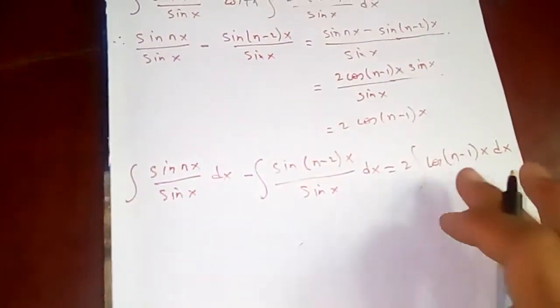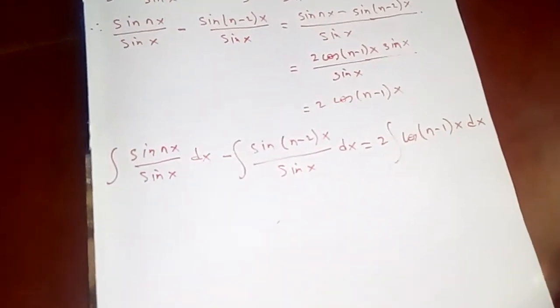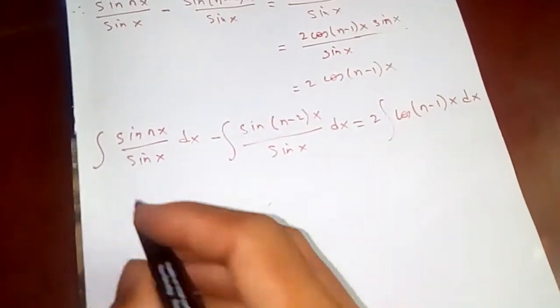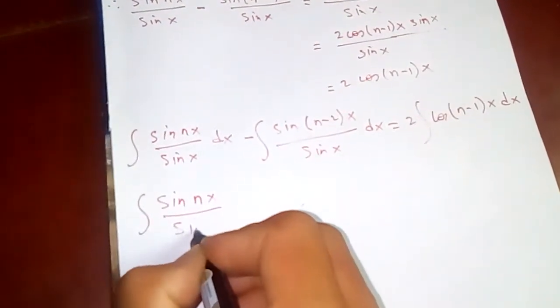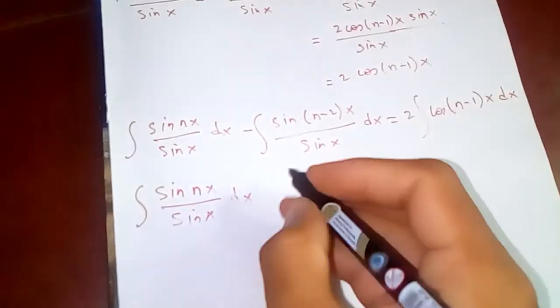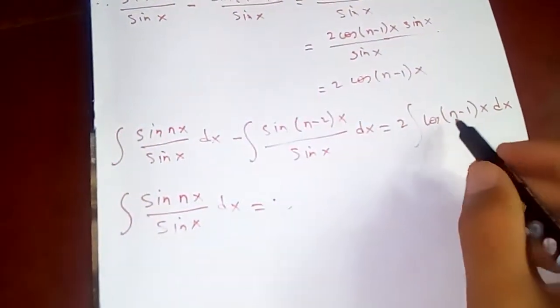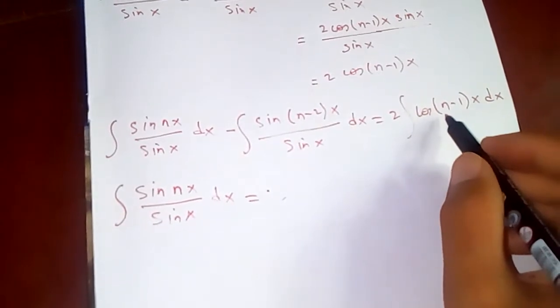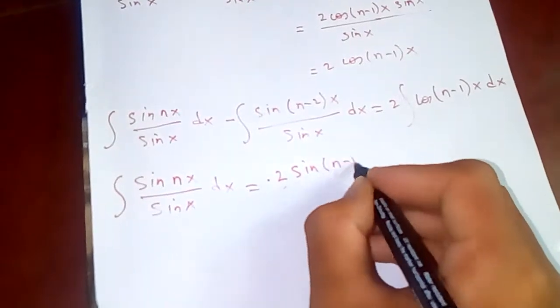So this is easy to evaluate now. We can just say integral of sin^n x over sin x dx equals... The integration of cos is just sine, right? Sine^(n-1)x.